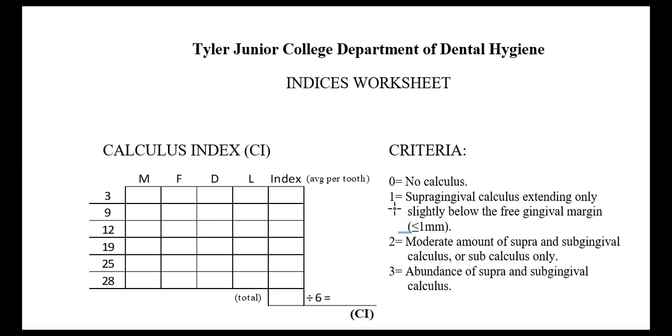Two is going to have a moderate amount of calculus, and a three is going to have an abundance of calculus. So we're going to be using those numbers to determine our overall calculus index.